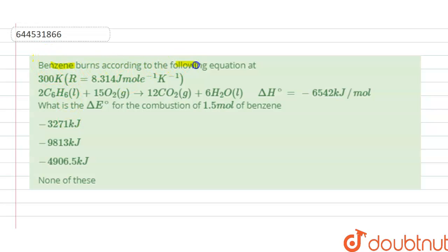Benzene burns according to the following equation at 300 Kelvin. The gas constant R is 8.314 joule per mole per Kelvin. We have 2C₆H₆ liquid plus 15O₂ gas yields 12CO₂ gas plus 6H₂O liquid.